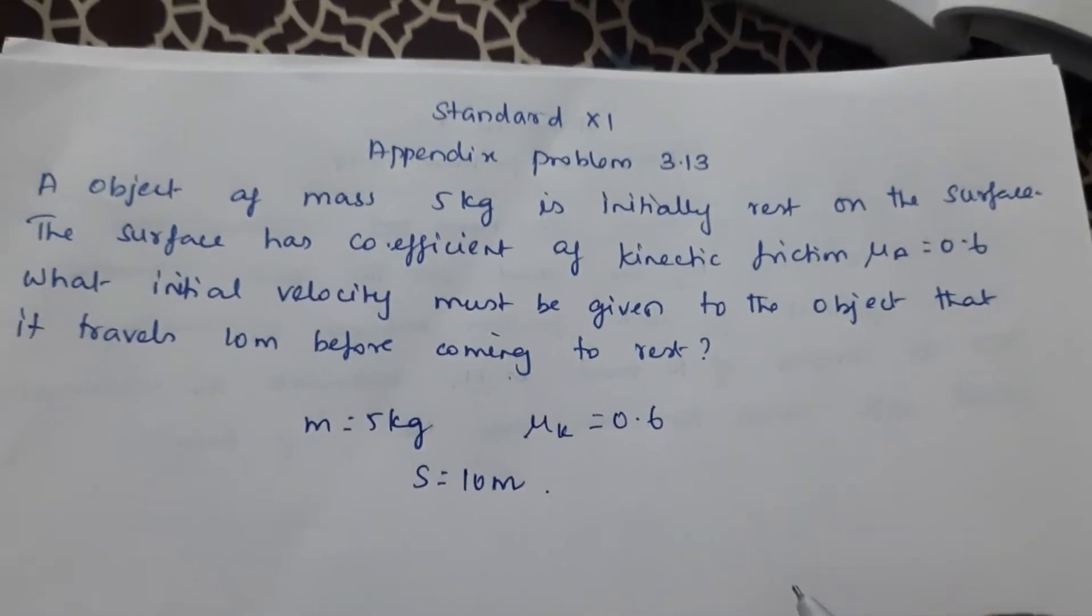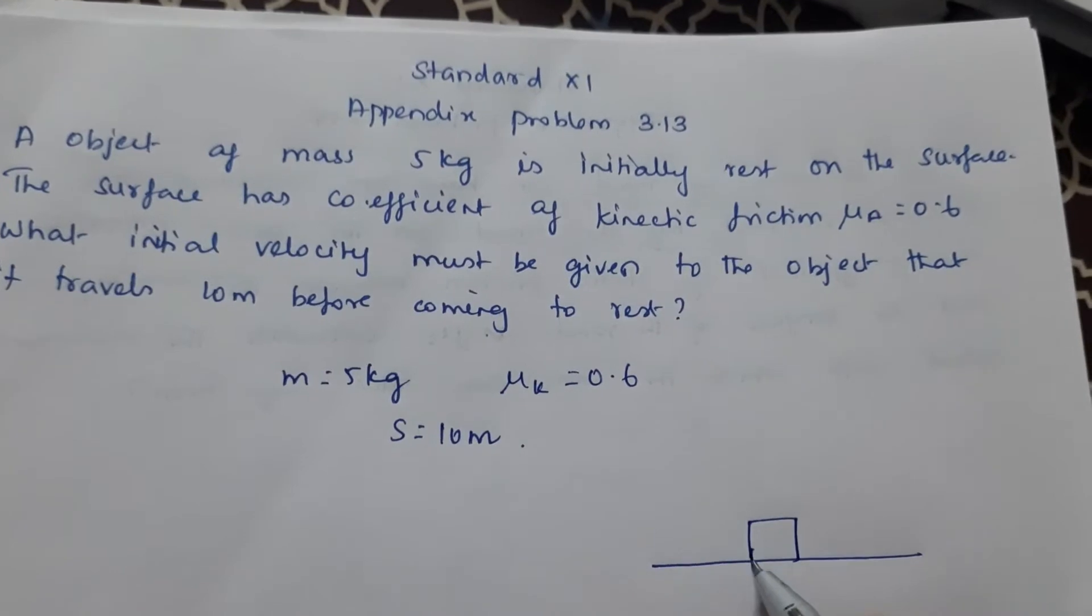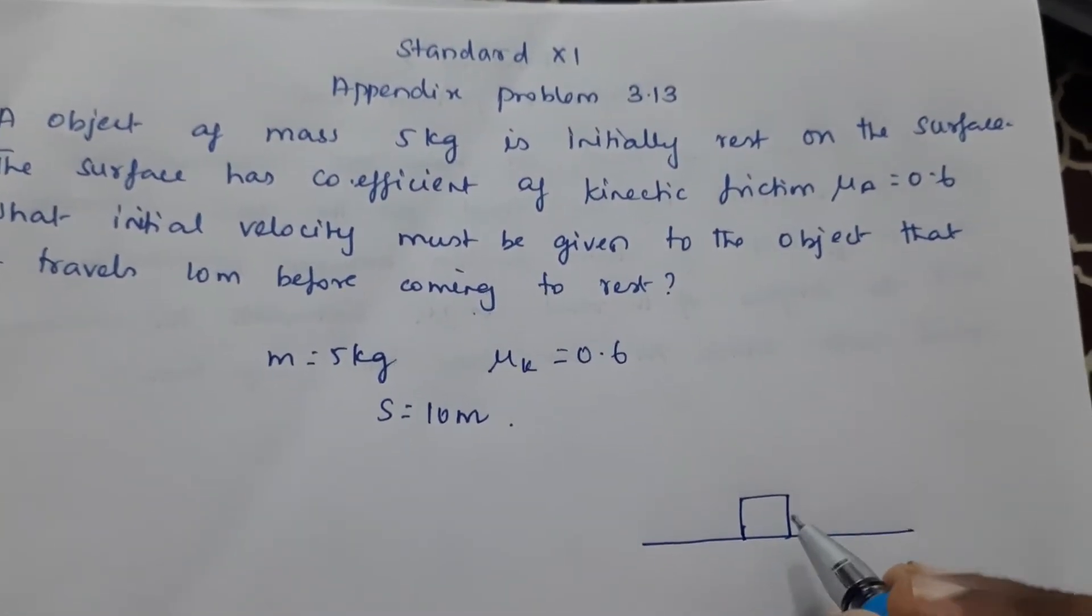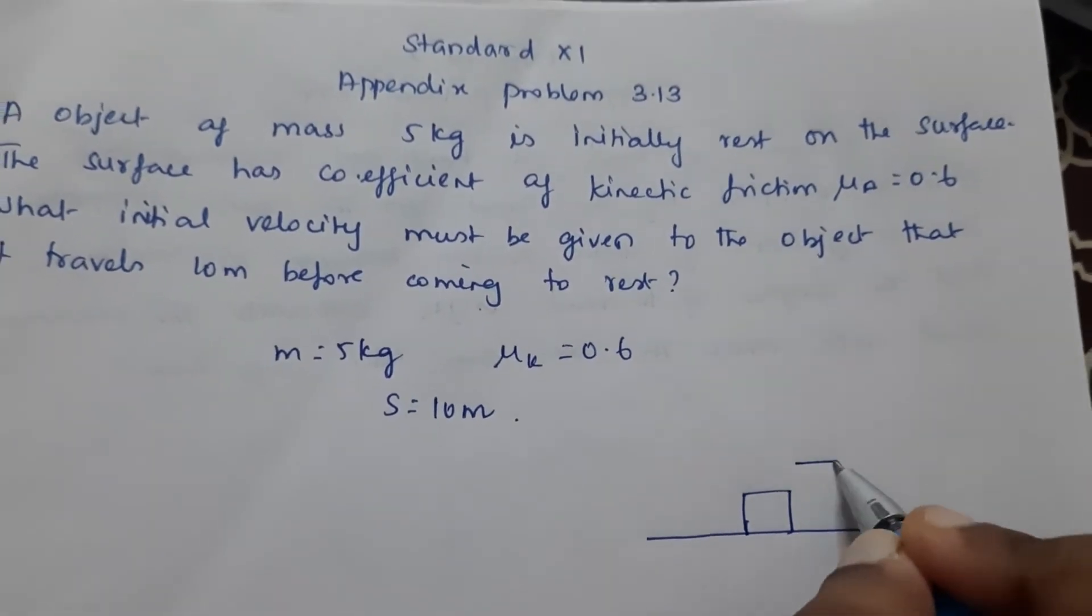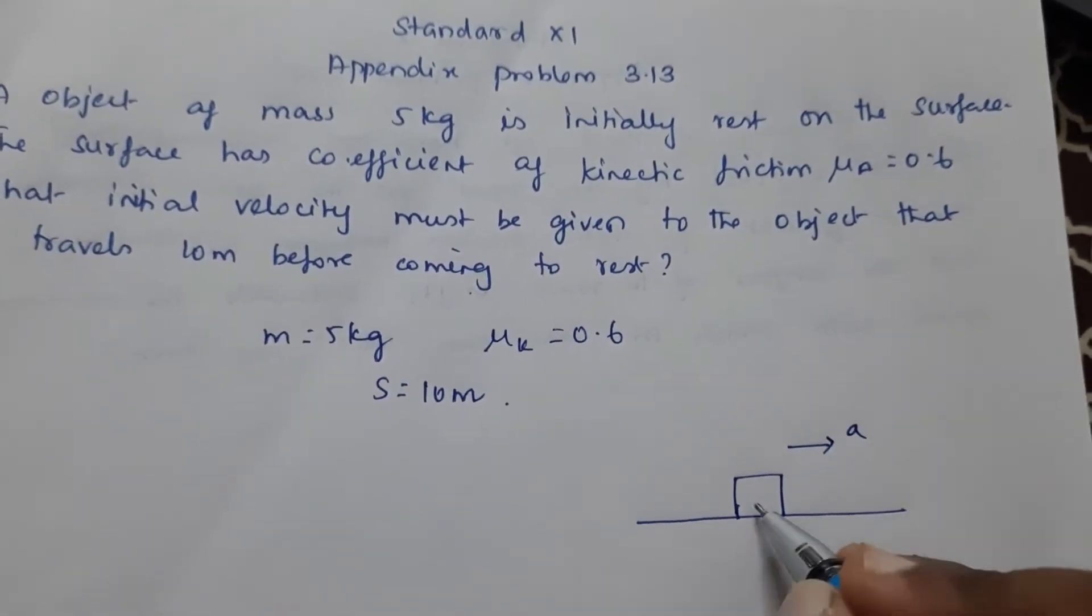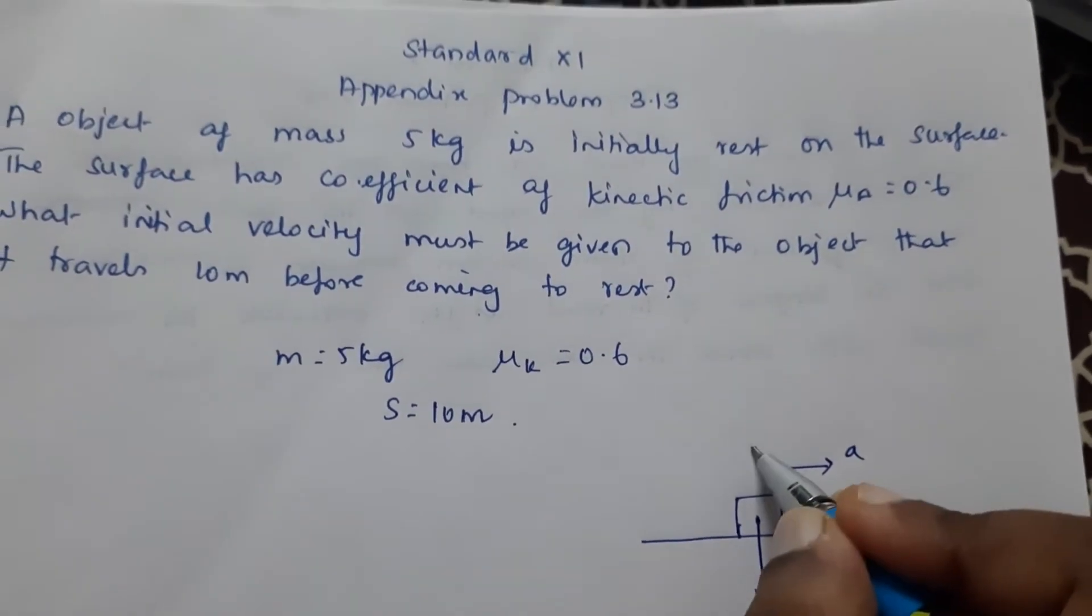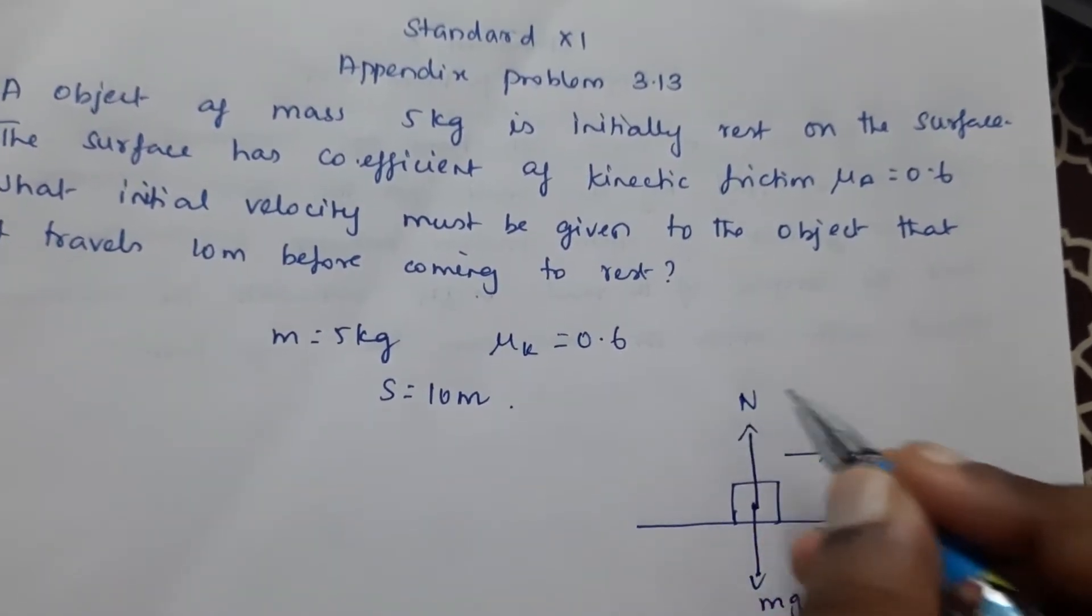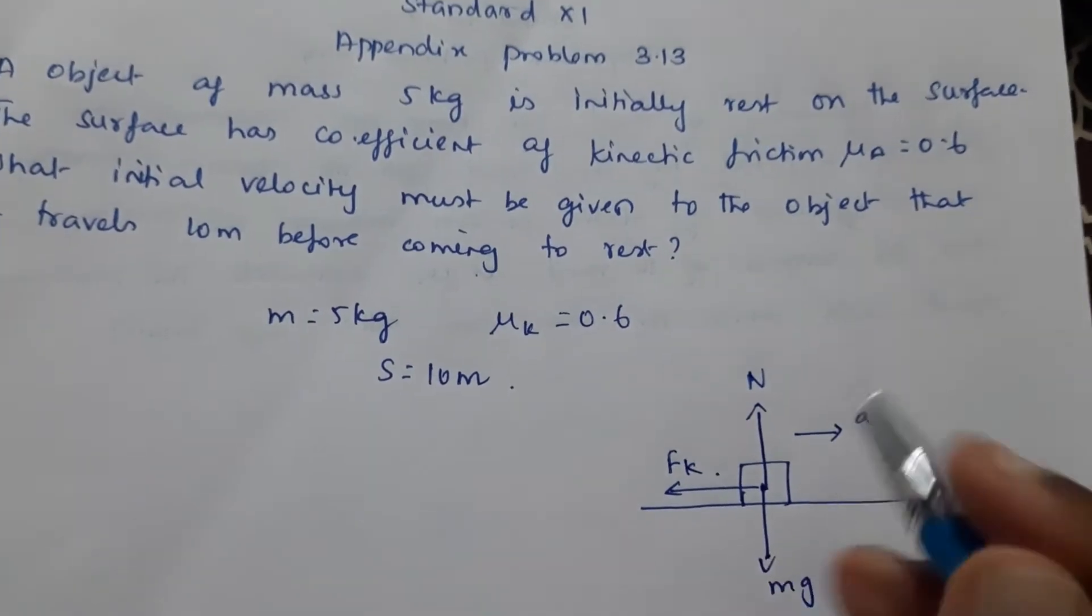Now we can take this as an object which is at rest. So this is having mass here. Now what are the forces acting here? The object is accelerating in the x direction. Here the force acting is mg. Here it is acting as normal force and here this is the kinetic frictional force.